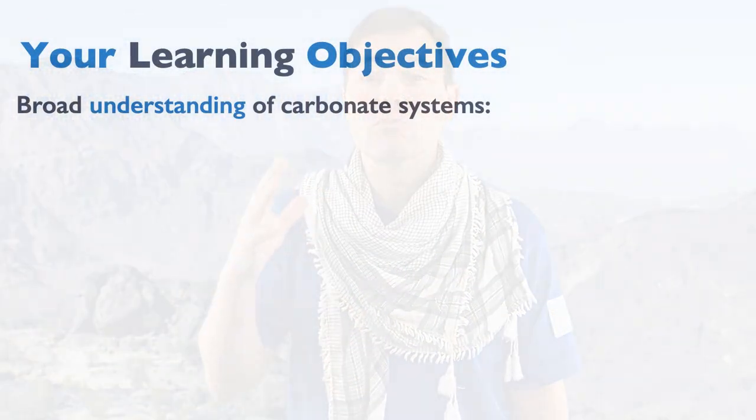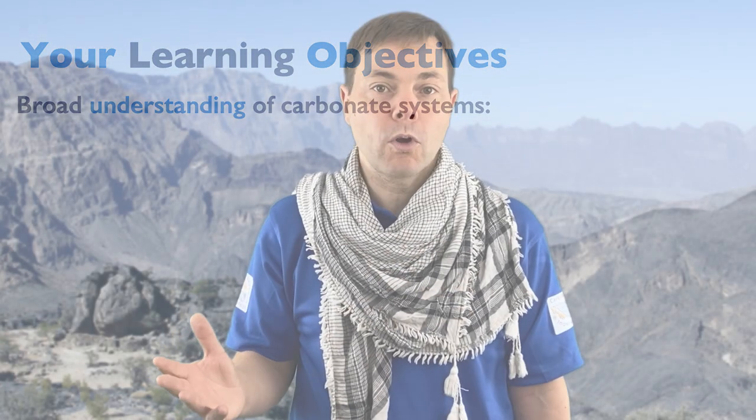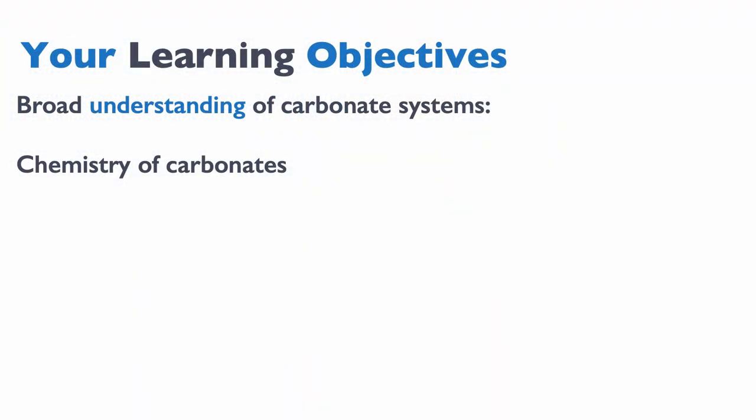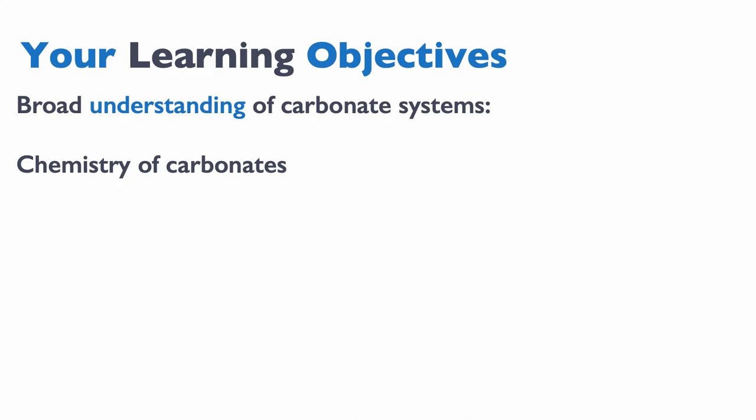Let's start with some learning objectives — what do I want you to know after you take my course? The first thing, broadly speaking, is that I want you to have a really broad understanding of carbonate systems, meaning a full understanding of how carbonates fundamentally work. And we have a whole week to work towards that. That includes understanding the chemistry of carbonates, because carbonates are primarily chemical sediments.